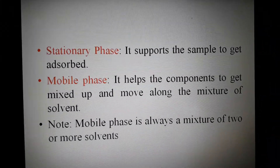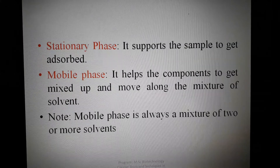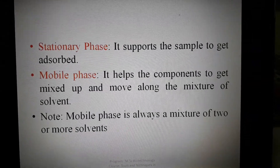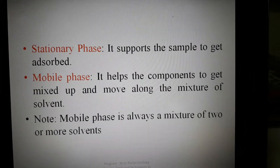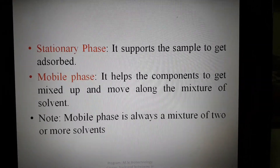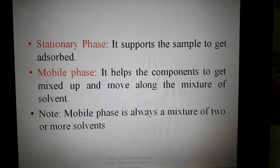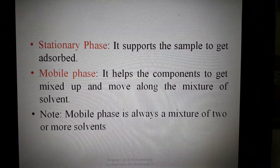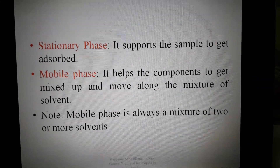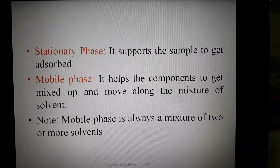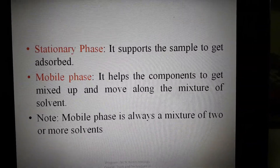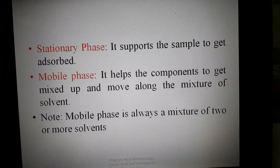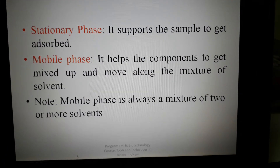In chromatography we have two phases: the stationary phase and the mobile phase. The stationary phase supports the sample — it provides a place for the sample to get adsorbed. The mobile phase helps the components get mixed and move along with the solvent. The mobile phase is always a mixture of two or more solvents, as different components dissolve in different solvents.